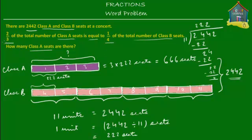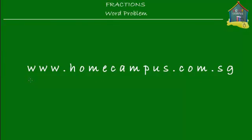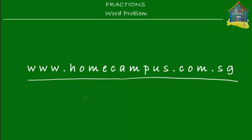Quite a simple problem, isn't it? The only tricky part is the comparison — two-thirds of the total number of Class A seats is equal to one-quarter of the total number of Class B seats. If you read that statement carefully and put it on the model carefully, you can easily calculate the answer. Hope you'll go and solve more word problems at www.homecampus.com.sg. Practice makes you perfect. This is Em signing off — bye-bye!